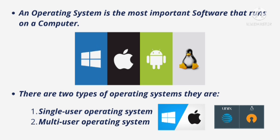Now we will go to the operating system. An operating system is the most important software that runs on a computer. By the word 'operating', we understand it as the thing which operates the computer. Some examples are Windows, and Apple — which is for MacBook — uses the iOS operating system, and then Mac OS.